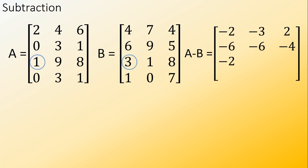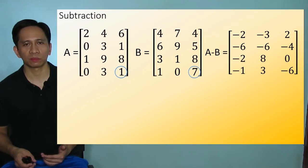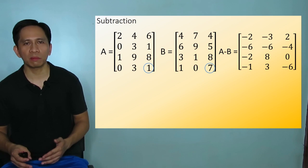1 minus 3 equals negative 2, 9 minus 1 equals 8, 8 minus 8 equals 0, 0 minus 1 equals negative 1, 3 minus 0 equals 3, and 1 minus 7 equals negative 6.